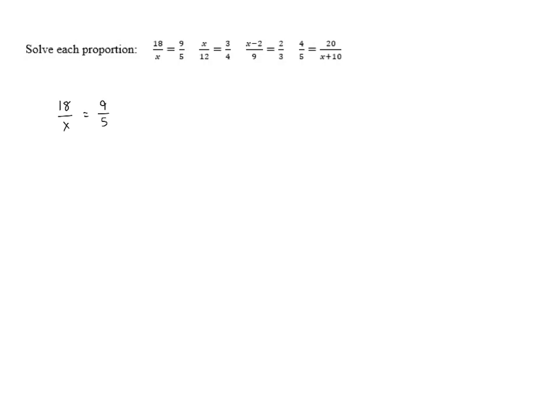The way that cross multiplication works is that we look at the parts that are diagonally opposite each other, so here we have x times 9 on one side, and then we've got 18 times 5 on the other, and we look diagonally opposite, and we set those equal to each other.